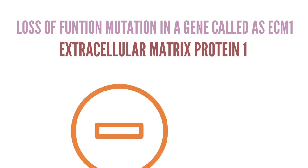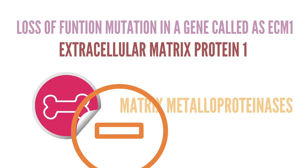This secretory glycoprotein is a negative regulator of endochondral bone formation and matrix metalloproteinases. As a result of the loss-of-function mutation of this gene, there is deposition of hyaline-like material in multiple organs — hence it is also called hyalinosis cutis et mucosae.